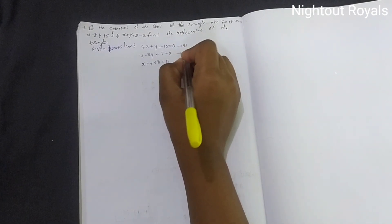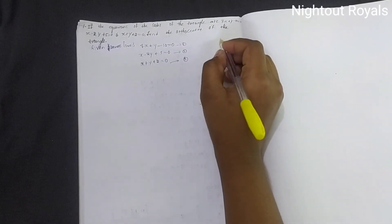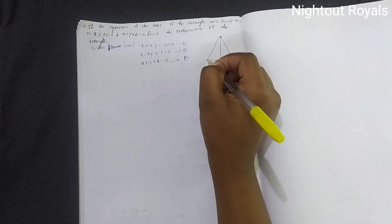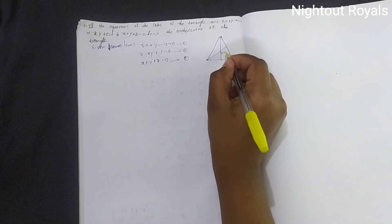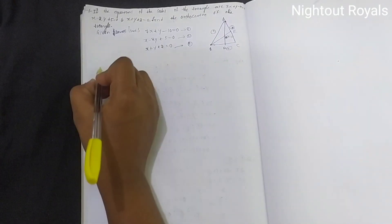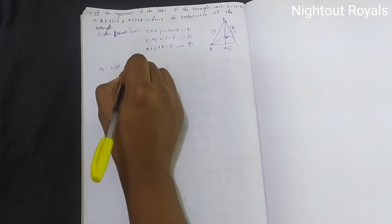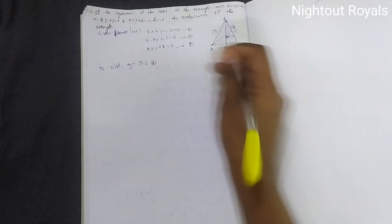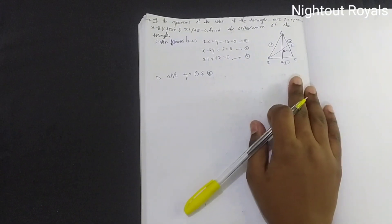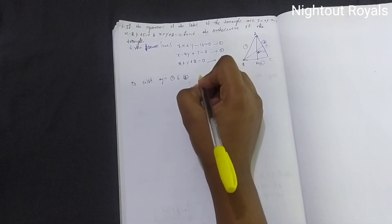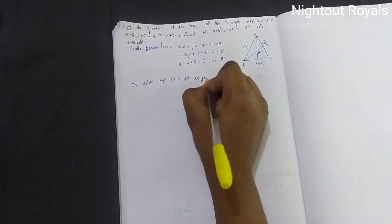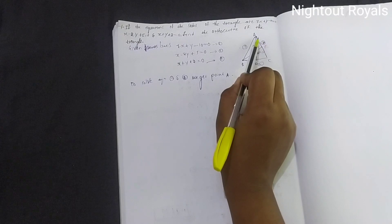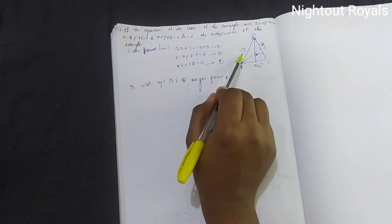These are Equation 1, Equation 2, and Equation 3. We draw the triangle. We will find out these points of x and y. To solve Equation 1 and 3, we get point A. Solving equations 1 and 3, point A is (1, 2).